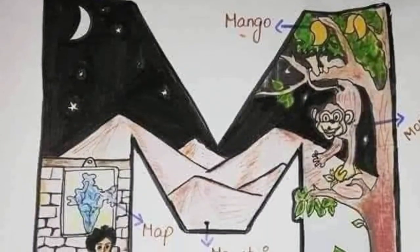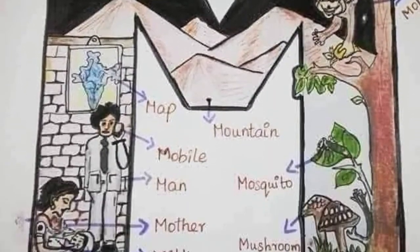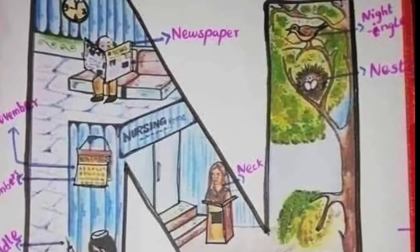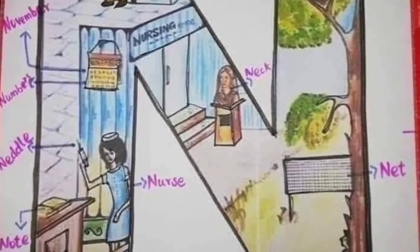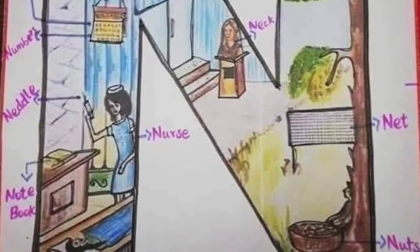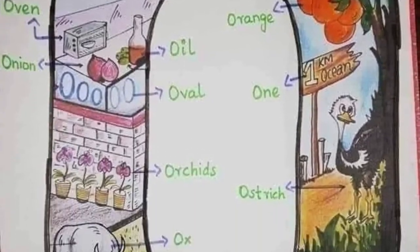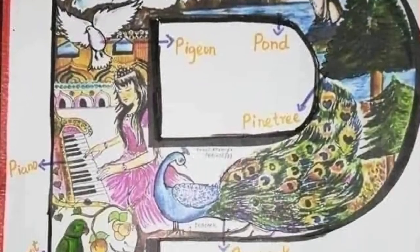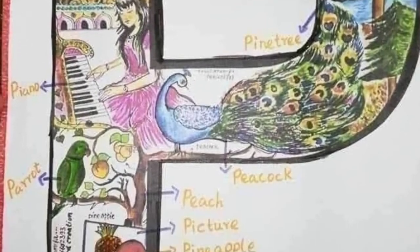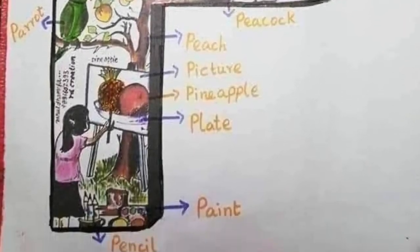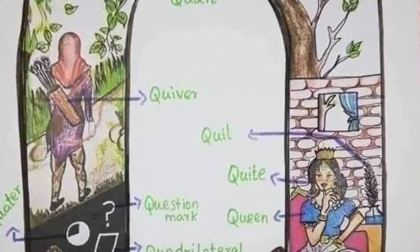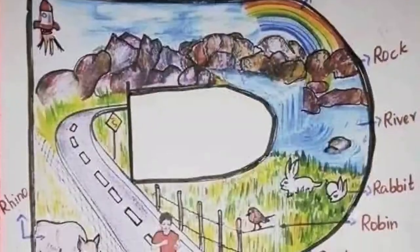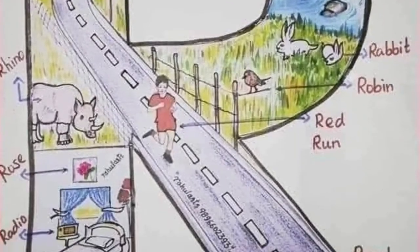M for mobile, N for nurse, O for orange, P for peacock, Q for cute, R for road.